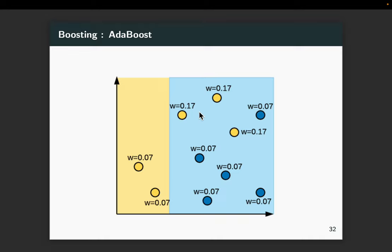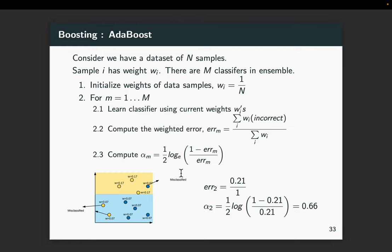We repeat the exercise taking into consideration the updated weights. With the new split, three points are misclassified with weights 0.07, 0.07, 0.07, so the sum of misclassified weights is 0.21 — down from 0.3 in the first iteration, showing we're moving in the right direction. Alpha_2 equals (1/2) * log((1 - 0.21) / 0.21), which comes out to 0.66. We again update weights using the same formula and normalize.